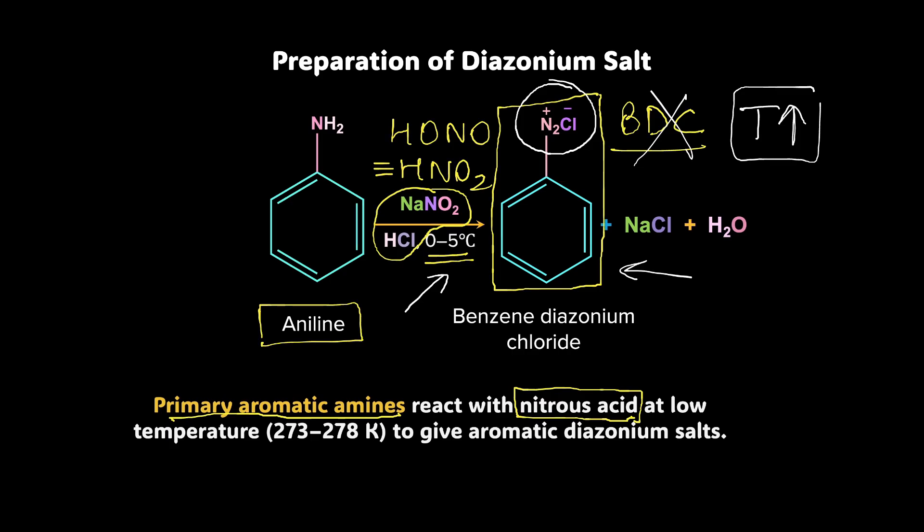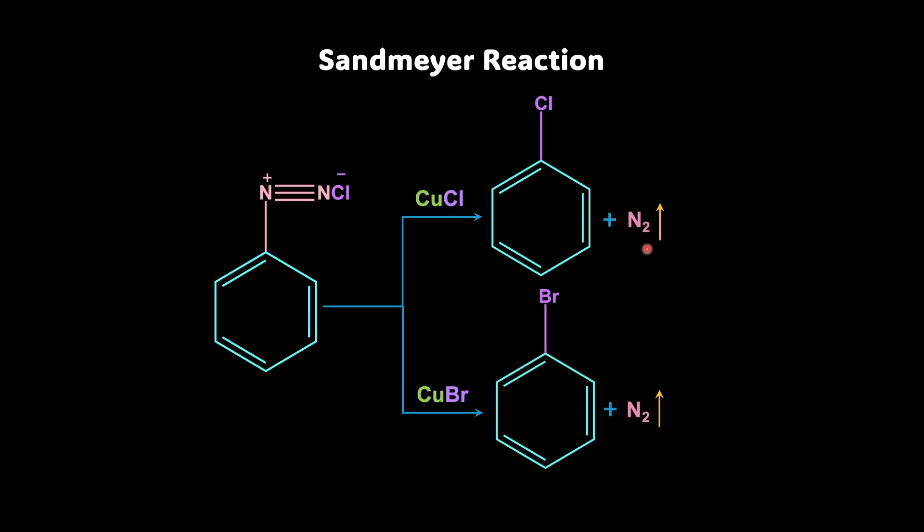Now, from aniline, we have got benzene diazonium chloride by taking this reaction mixture of sodium nitrite and HCl in the presence of low temperature conditions of 0 to 5 degrees Celsius. Now, once you have this BDC, now the reaction begins.